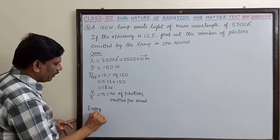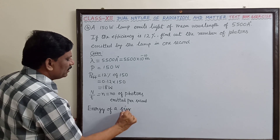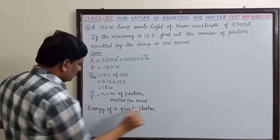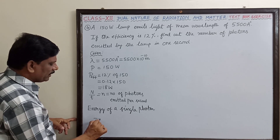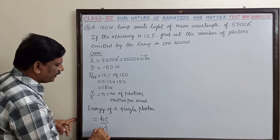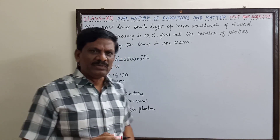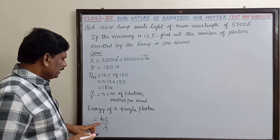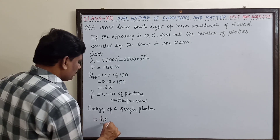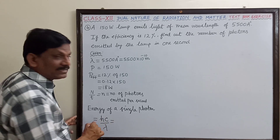The energy of a single photon is equal to hν, which is also written as hc divided by lambda. This is the energy of a single photon, and this has to be determined.